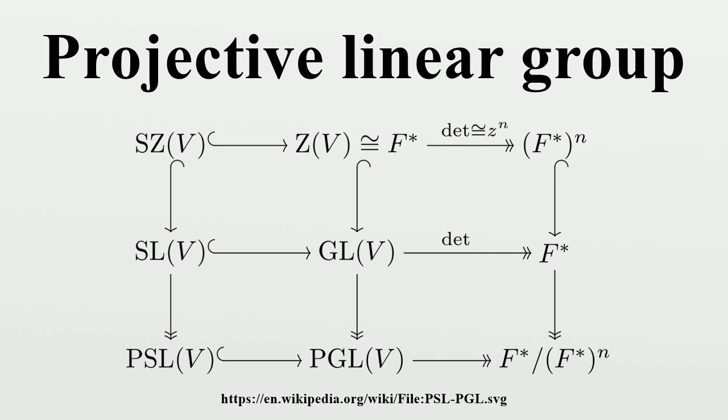PGL does not act 4-transitively on the projective line. As P¹(F_q) has q + 1 equals 4 points, so 3-transitive implies 4-transitive, the invariant that is preserved is the cross-ratio, and this determines where every other point is sent. Specifying where three points are mapped determines the map. Thus in particular it is not the full collineation group of the projective line.